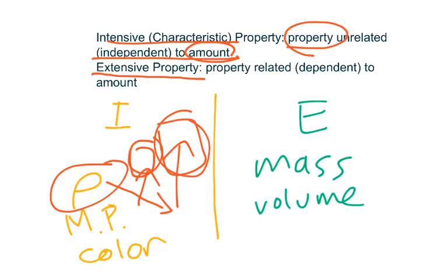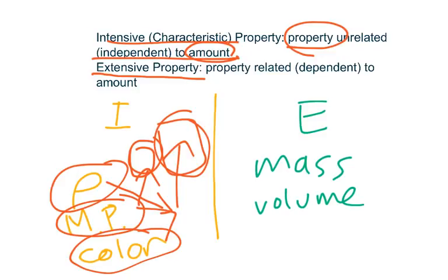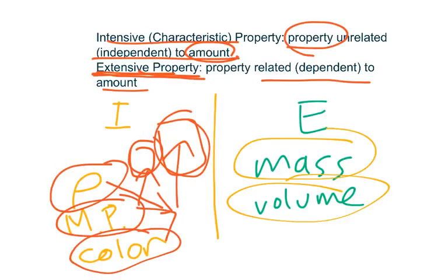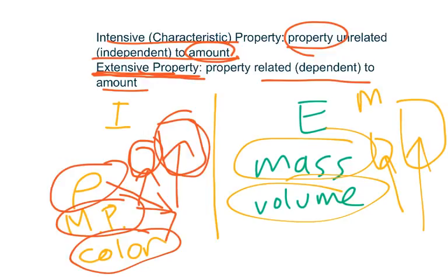Another characteristic property is melting point and color, because no matter how much substance you have, the melting point and the color will stay the same. Extensive properties are properties that are related to the amount of substance. The most common ones are mass and volume, because the more stuff you have — like if I have more yellow rocks — then you have more mass or more volume. That's why mass and volume are dependent on the amount of substance, which is why we call them extensive properties.